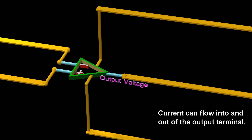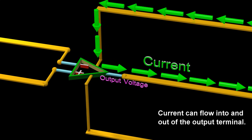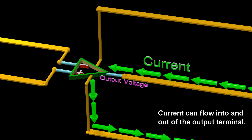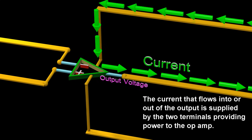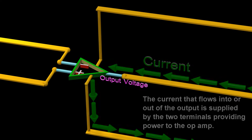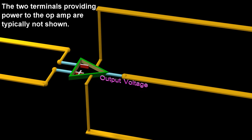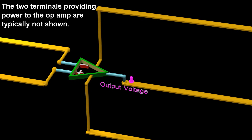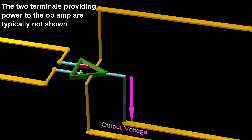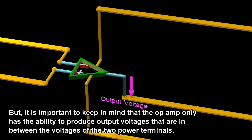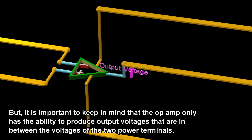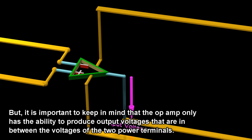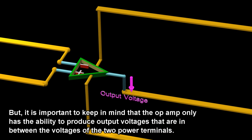Current can flow into and out of the output terminal. The current that flows into or out of the output is supplied by the two terminals providing power to the op-amp. The two terminals providing power to the op-amp are typically not shown, but it is important to keep in mind that the op-amp only has the ability to produce output voltages that are in between the voltages of the two power terminals.